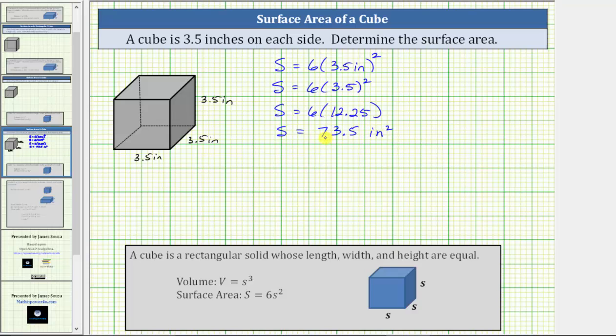This tells us it takes 73.5, or 73.5 square inches, to cover the outside of the given cube. Let's also write the result as a complete sentence. The surface area of the cube is 73.5 square inches.